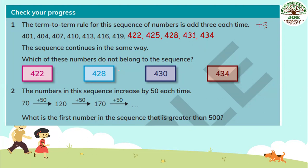Let's check. 422 is in the sequence, and 428 is also in the sequence. 430 — here is 431, so 430 is not included in the sequence. 434 includes. So the one that does not belong to the sequence is 430. Only one number.